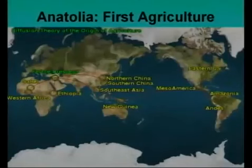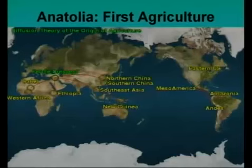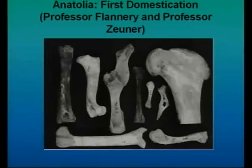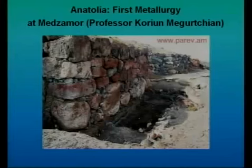I was brought up with Sumeria in ancient Iraq being the first major civilization, but that's shifted — now it's Anatolia very much. In Anatolia, archaeologists have a diffusion theory of the origin of agriculture. Looking at the map, you'll see the Fertile Crescent, which was the beginning of where simple agriculture first began and the growing of corn. First domestication also took place in the same region, and first metalworks were also traced back to that area.